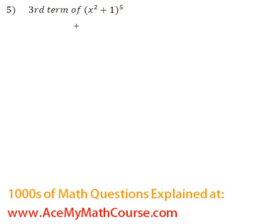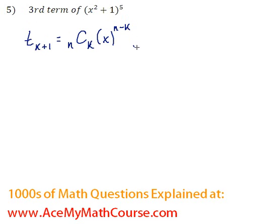Now we're going to be looking for the third term of this expansion, and I will be using the formula. The term of number k plus 1 will be n choose k times the first term to the power of n minus k times y to the power of k. So since we want the third term, k plus 1 is 3, which means that k is 2.